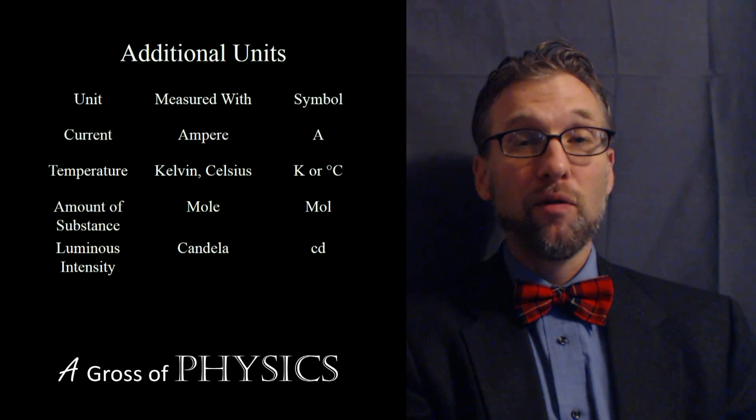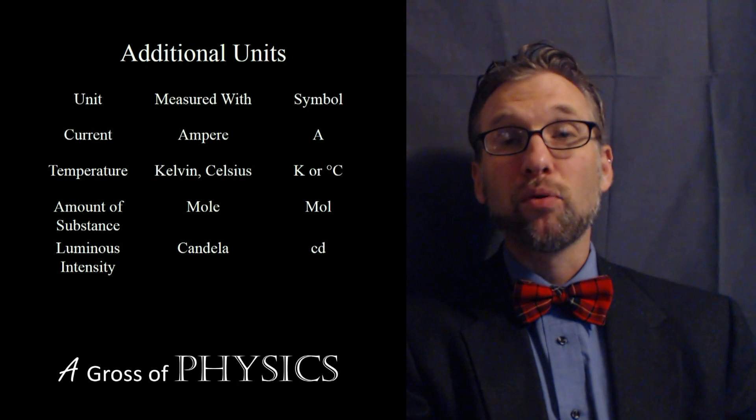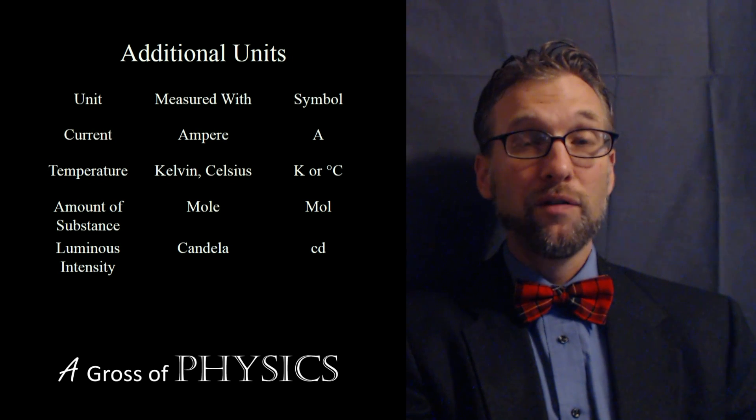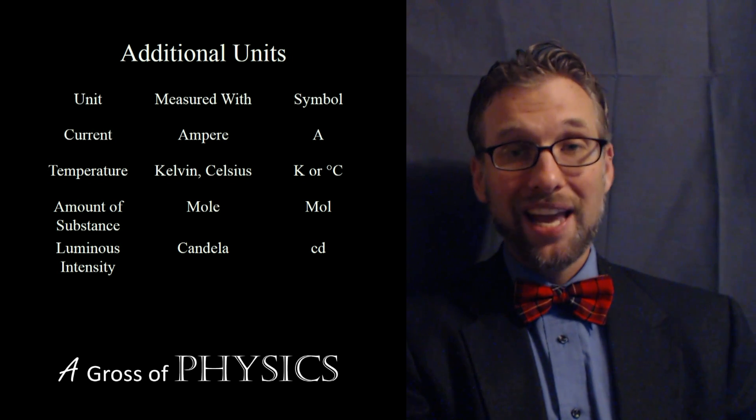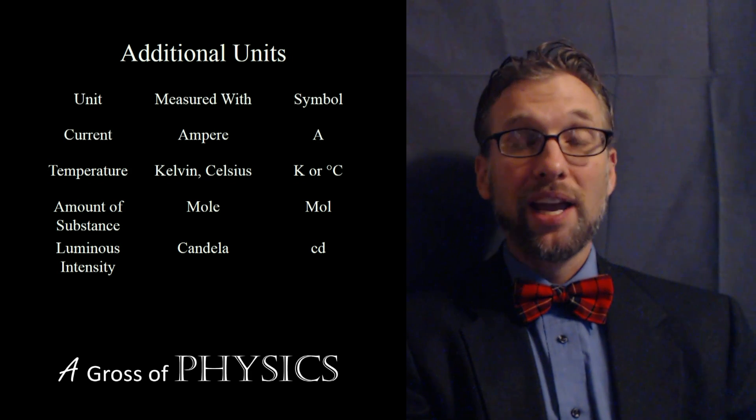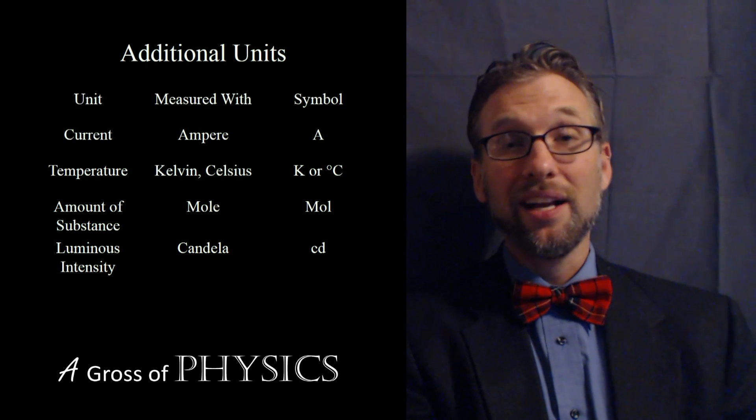Now finally we have the luminous intensity, which is the candela. It is based on how bright an object is. And as you can tell from the value, the variable candela is based on how bright a single candle was when the unit was defined. So a single candle had a certain value, one candela, and multiple candles would be brighter. Therefore it would have higher values for candelas.